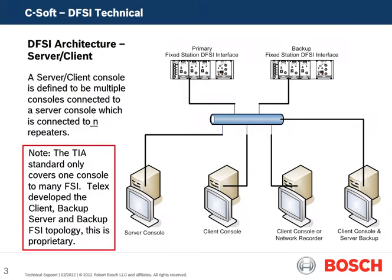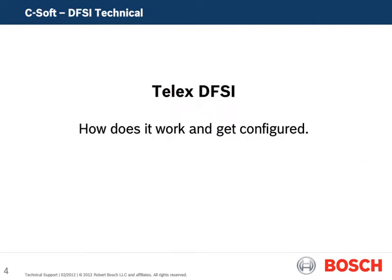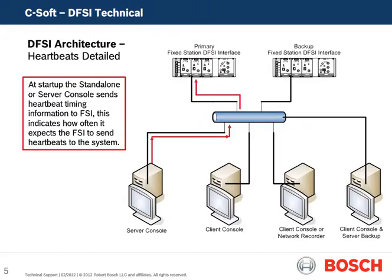Additionally, a backup server console can be added to the system for redundancy. Please note that C-SOFT can be configured with backup fixed station interfaces in the event of either equipment or connectivity failure to the primary fixed station. Now that we've discussed the two system deployment topologies — stand-alone or server client — let's look at how the units intercommunicate and get configured.